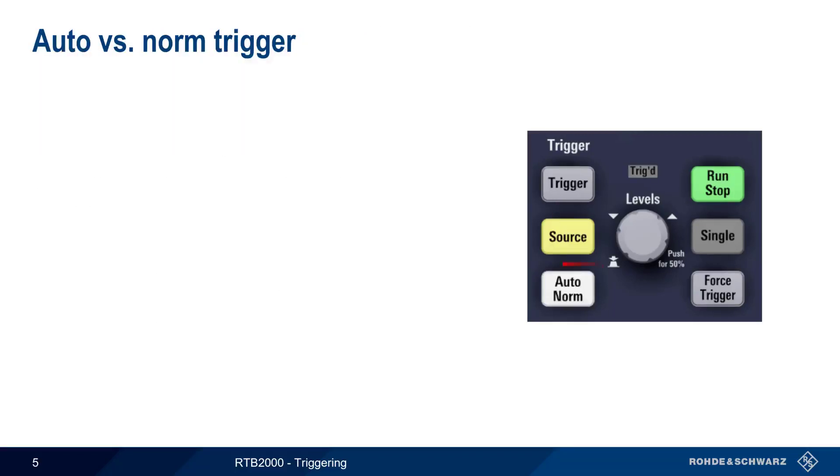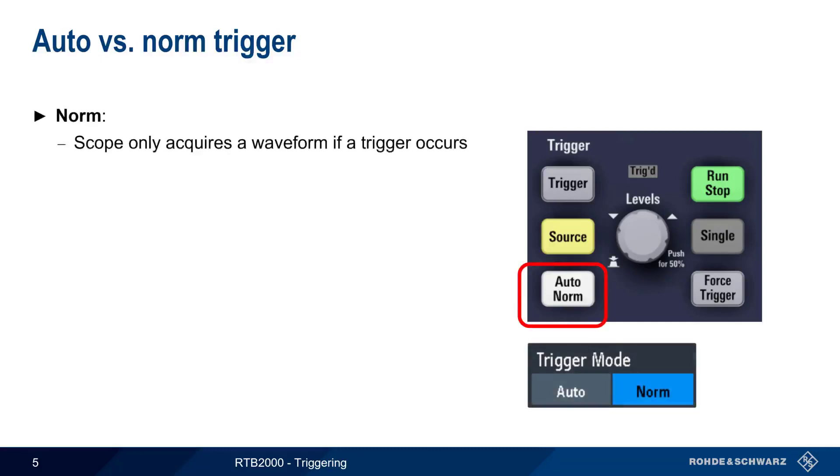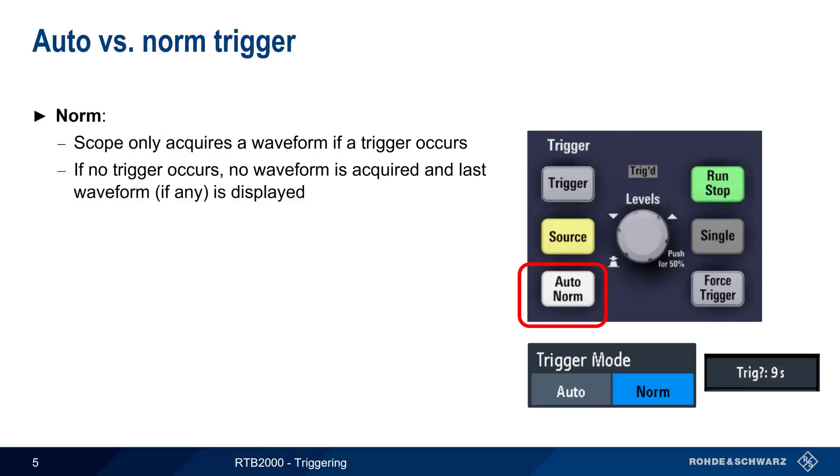On most oscilloscopes there are two trigger modes, Auto and Norm. In Normal mode, the scope only acquires a waveform if a trigger event occurs. Therefore, if there is no valid trigger event, no waveform is acquired, and only the last waveform, if any, is displayed on the screen. A timer showing Trigger? and a number of seconds will also appear when there is no trigger. The force trigger button can be helpful in this case, since pressing it will manually trigger the scope and allow you to see any signals present, even if there is no valid trigger event.